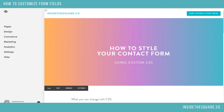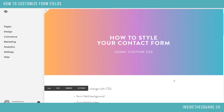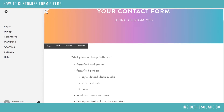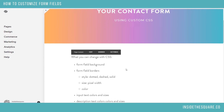I have another video that has a very brief description of this, but after fielding some questions in a Facebook group about CSS, I decided to spend a little bit more time on this, so we're going to get into some details. What you can change about your contact form using CSS: you can change the form field background, form field borders — your border options are generally dotted, dashed, and solid. You can also change the pixel width of the borders and their color, and you can change input text colors and sizes and description text colors and sizes. But for the purpose of this video we're going to focus on backgrounds and borders.